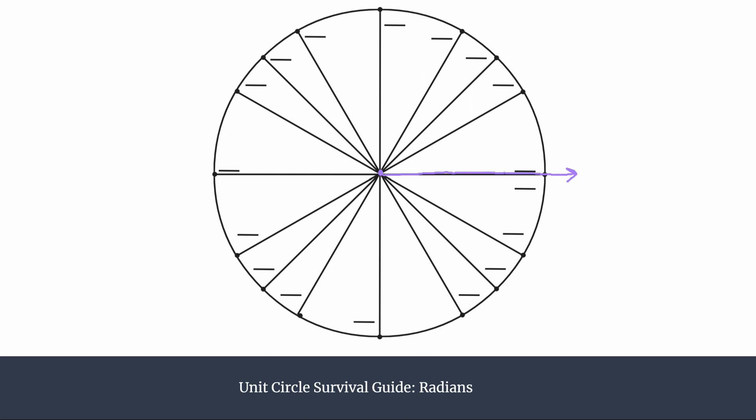And a radian is if you take the radius of your circle, that length, and wrap it around the circumference of your circle. So I'm just doing an estimate right here. It would be about like that, and that amount of rotation is equal to one radian.